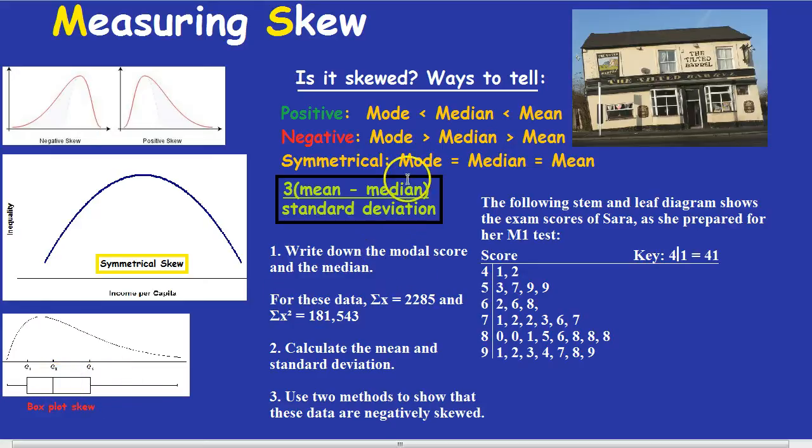The third way is more quantitative. If the mode is less than the median, which is itself less than the mean, therefore it's going to be positive. Similarly, if the mode, which is the tallest bit on the graph, is greater than the median, which is the middle person, which is greater than the mean, in the middle of the bulk, then it's negatively skewed.